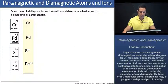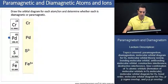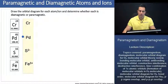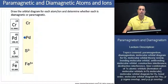We're being asked to draw the orbital diagram for each atom or ion and determine whether each is diamagnetic or paramagnetic. Here we have chromium, palladium, sulfur, and iron. We've already covered electron configuration extensively in the preceding lecture. We should also note that chromium and palladium have anomalies in their electron configuration, which we discussed extensively in that lecture as well. Thus, the orbital diagram will be slightly more challenging for these.